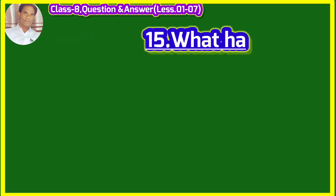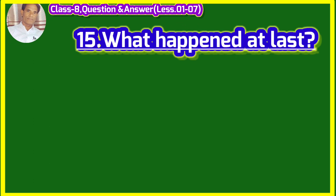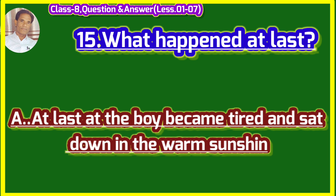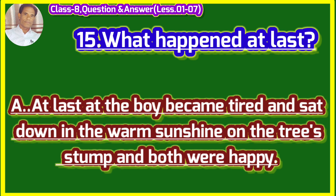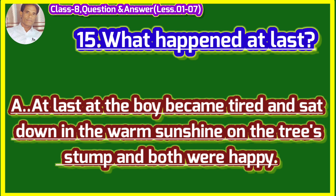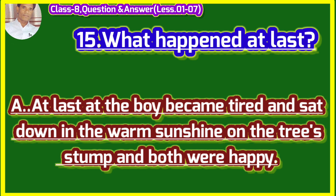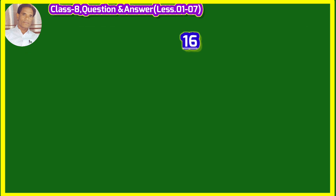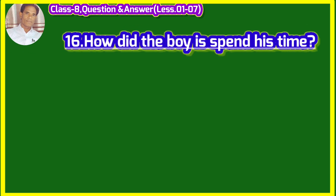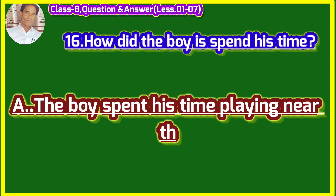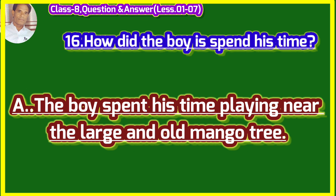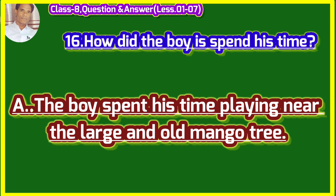What happened at last? (Anth me kya huwa?) At last the boy became tired and sat down in the warm sunshine on the tree's stump and both were happy. Anth me ladka thak gaya aur suraj ki garmi mein riksh ki thamut par baith gaya. Katha dono khush the. How did the boy spend his time? (Ladke ne apna samay kaisa vyatit kiya?) The boy spent his time playing near the large and old mango tree. Ladke ne apna samay bade tatha bude aam ki riksh ke paas khailkar vyatit kiya.